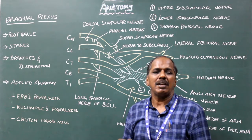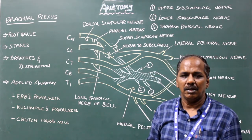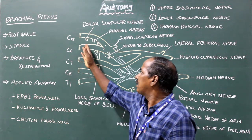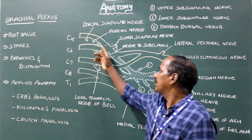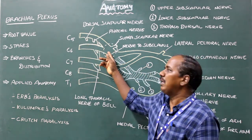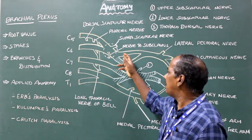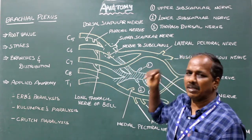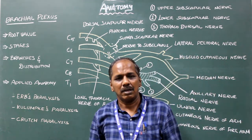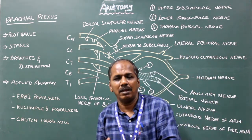Stages of brachial plexus. There are root stage, trunk stage, division stage, cord stage and branches. So there are totally five stages in the brachial plexus.